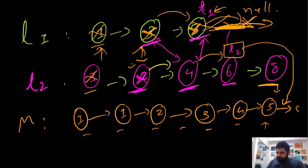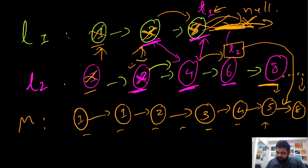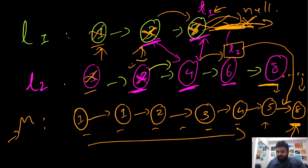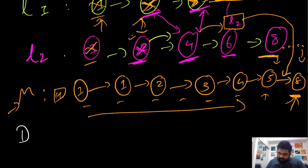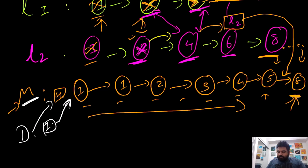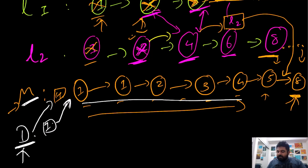Whatever remaining elements are still pending in the other list can be directly appended to the merge list, because all previously entered elements were compared, and the remaining ones are already sorted. In this case, only node 8 remains and it is appended directly. The tricky part is that while iterating we end up at the tail, so we use a dummy node as the head to track the start of the merge list.